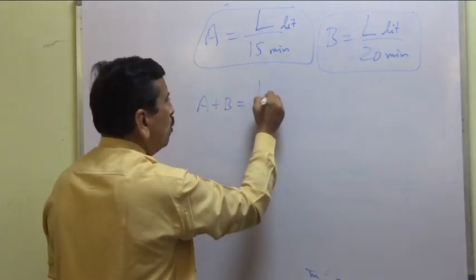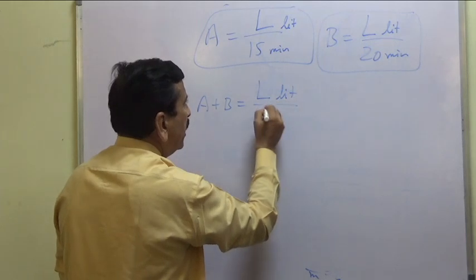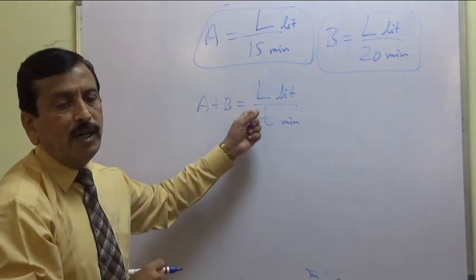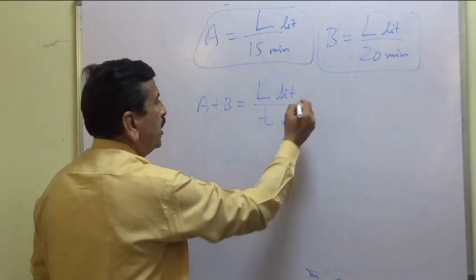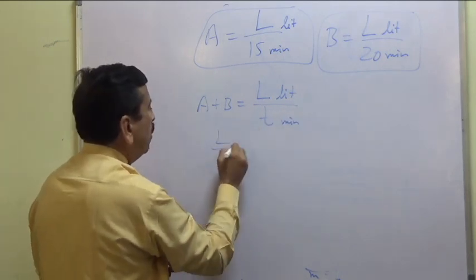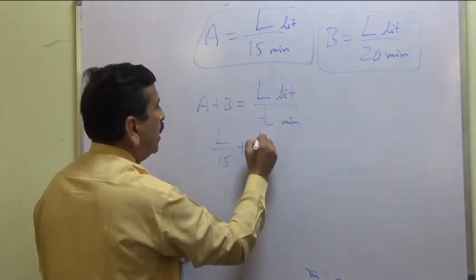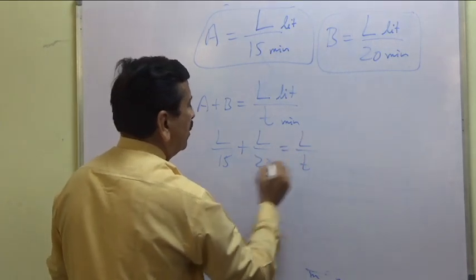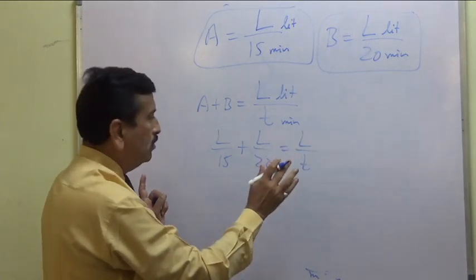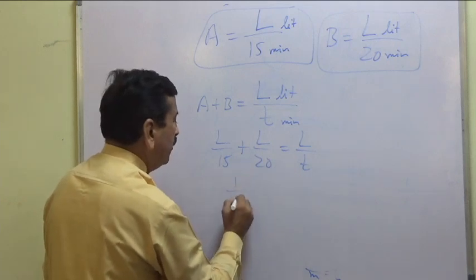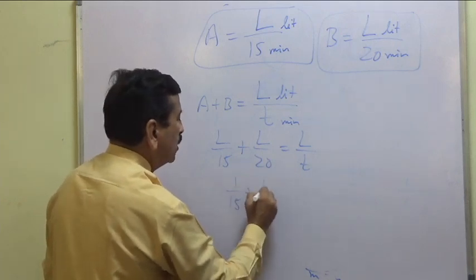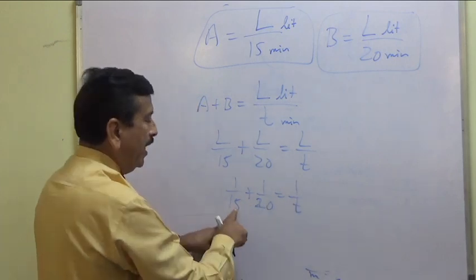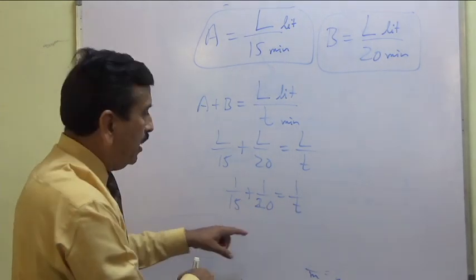The flow rate of pipe A is L by 15 and pipe B is L by 20. Combined, they fill at L by T. L cancels on all sides and we get 1 by 15 plus 1 by 20 equals 1 by T. The LCM of 15 and 20 is 60, so multiplying through by 60 gives 4 plus 3 equals 60 by T.